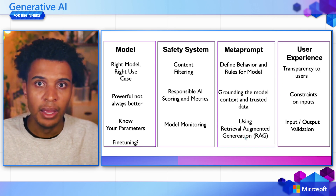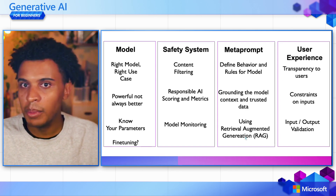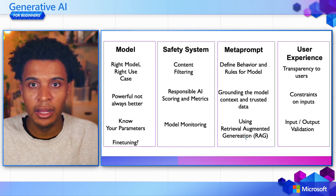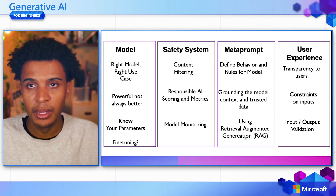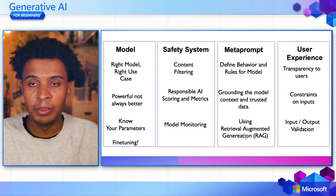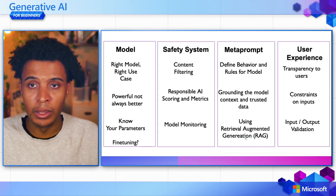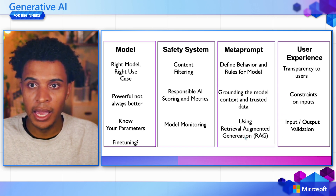Next is the Metaprompt — this is really how we define the behavior or rules for the model in terms of how it engages with users. We can ground the model in context or trusted data using techniques like retrieval augmented generation, which is covered in this course as well. And then lastly, and most importantly, is on the user experience side: building transparency to users that they are engaging a generative AI application is very important, as well as putting constraints on user inputs to limit and mitigate the harms they could bring about, and doing input or output validation on responses.